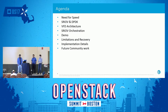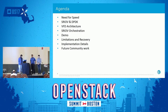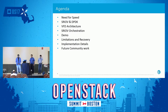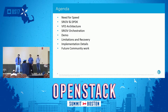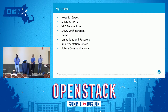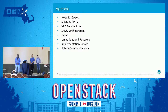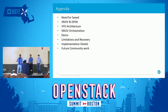We have a power-packed agenda today. We'll start with why the need for speed, then how we achieve this with technologies like SRIOV and DPDK. Within AT&T, we've written a new service called VFD — Virtual Function Daemon — and we'll cover its architecture, end-to-end orchestration with ONAP and OpenStack, compute node internals, a demo showing near line-speed, limitations, implementation details, and upstream community contributions.